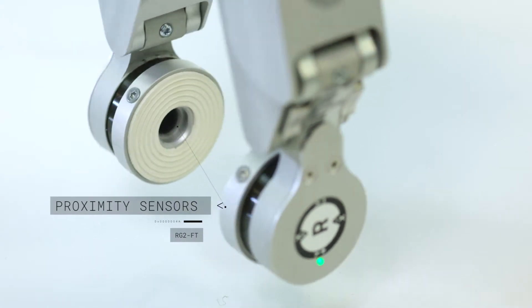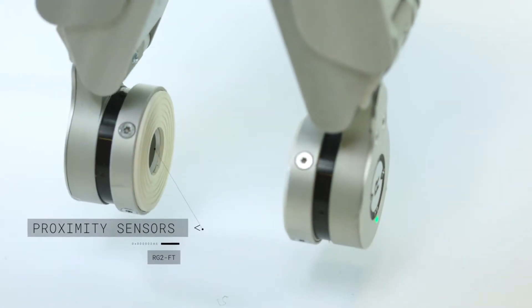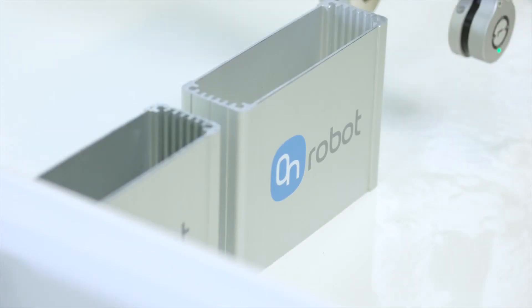The RG2FT proximity sensor can detect and center the gripper and the robot arm around the workpiece.